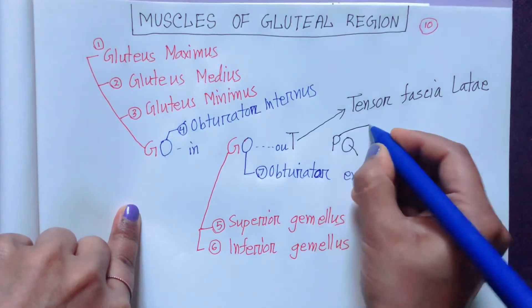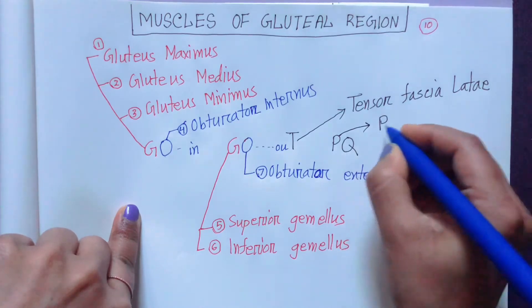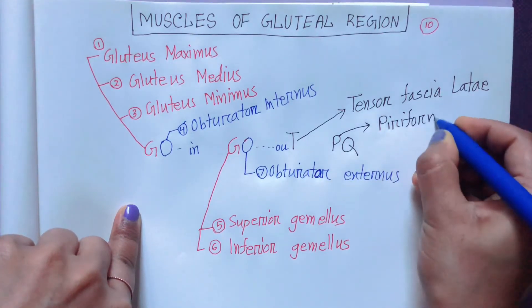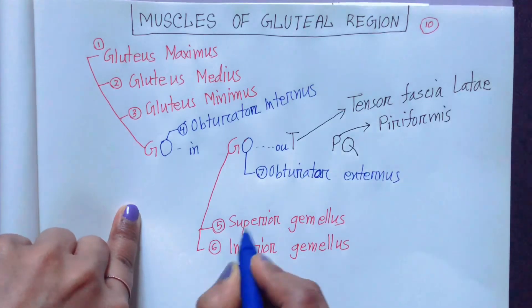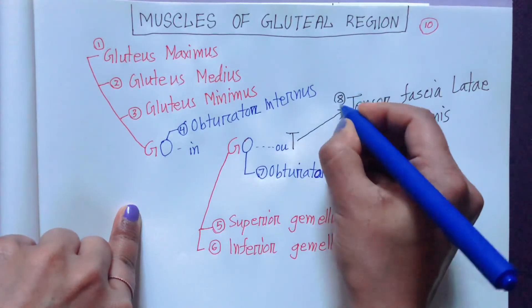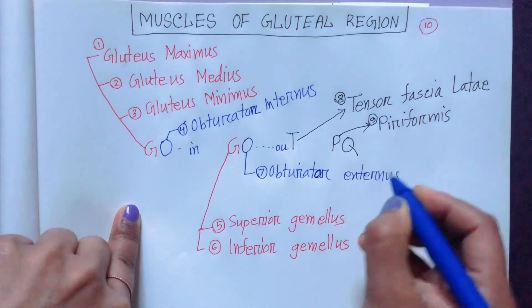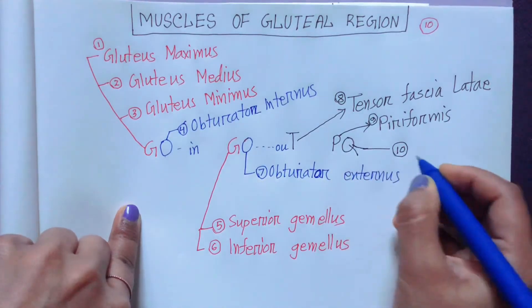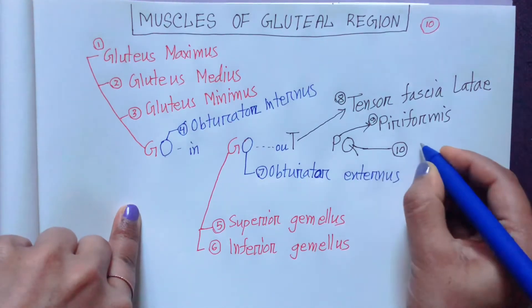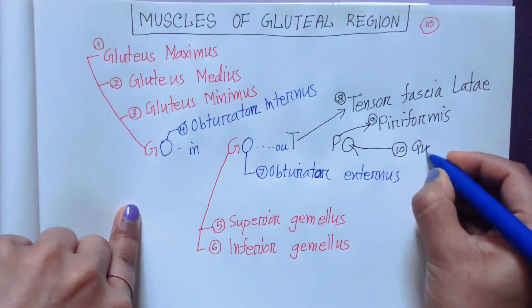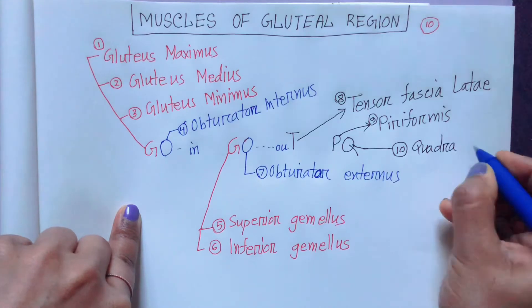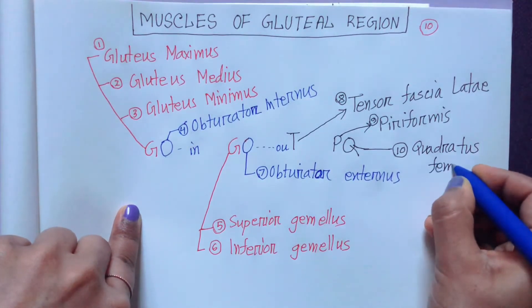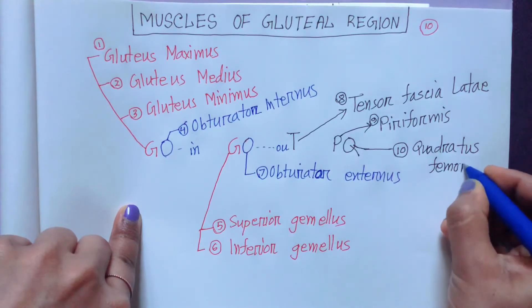Then P is for piriformis — that is number 8. Then 9 and finally 10: Q is for quadratus femoris. These are the 10 muscles of the gluteal region.